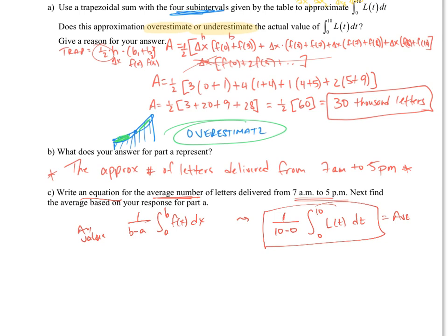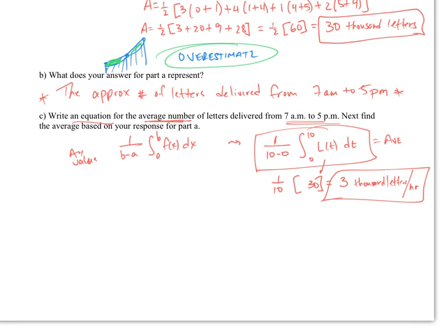In our case, we ended up with 1 over, and this is a 10-hour period, so we're going to say from 10 minus 0. And then we have our equation, which was 0 to 10 of L of t dt. Write an equation, here's my equation. This equals the average. We know 1 over 10, we found this answer in part A which was 30, and that gives me 3, and these are 1,000 letters per hour.